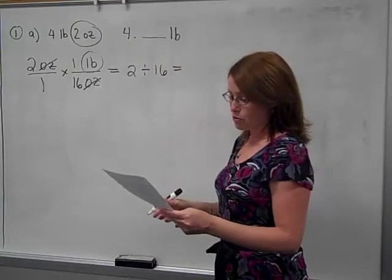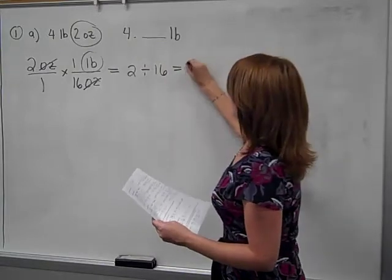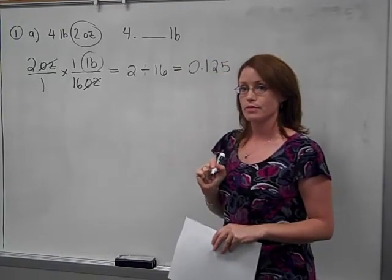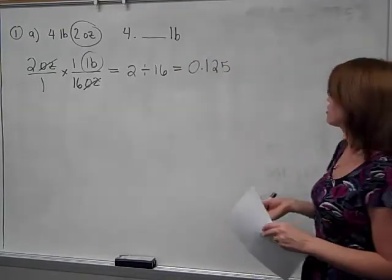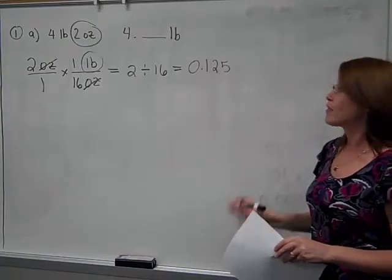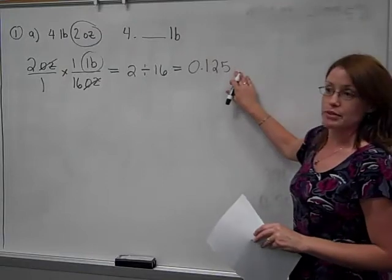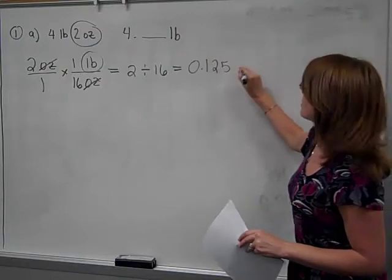Now fortunately that decimal does terminate and you end up with this decimal. If you read it properly, that's one hundred and twenty-five thousandths. But I'm not going to worry about that part right now. What unit goes with this? Pounds.